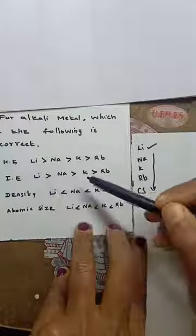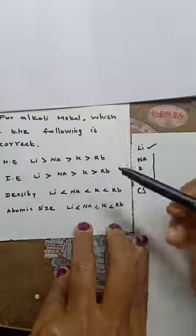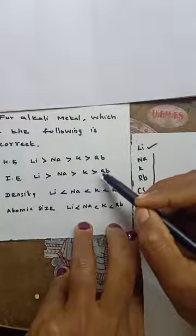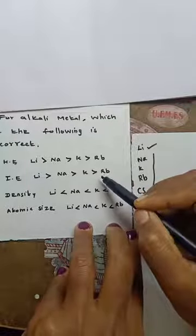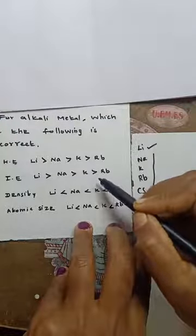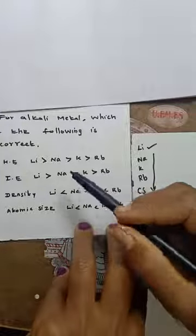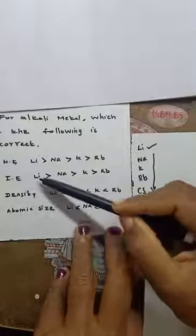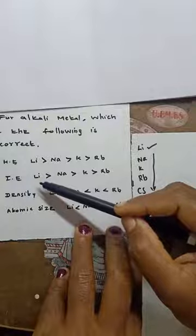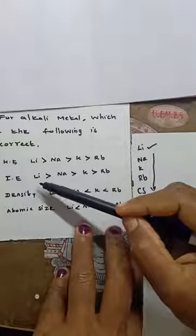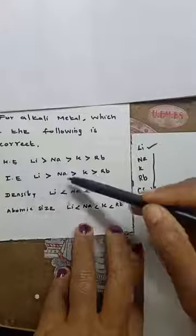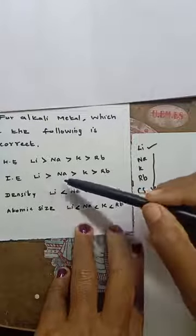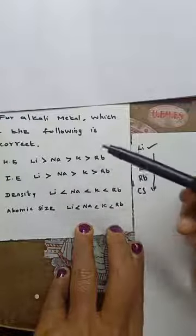Next, take option ionization energy. Ionization energy is the energy required to remove the electron from the outermost shell to form the cation. Lithium requires the highest ionization energy because it is closer to the nucleus and has a small size. So here also the order given - lithium has more ionization energy than sodium, potassium, rubidium - is correct.